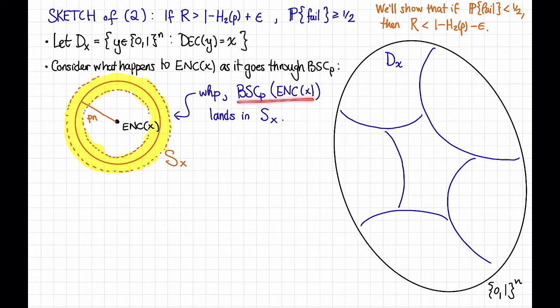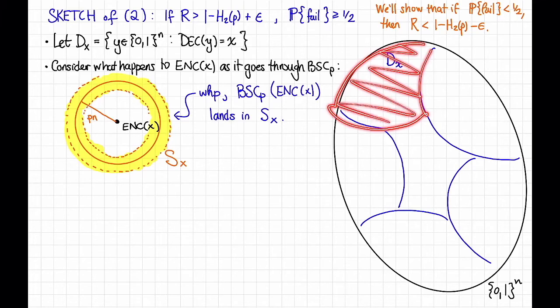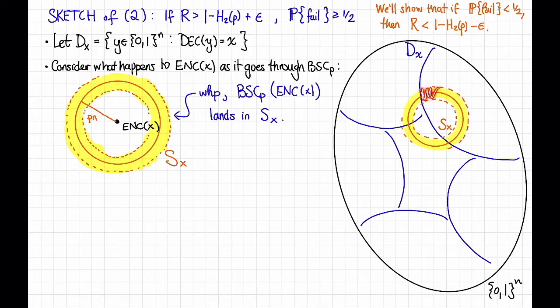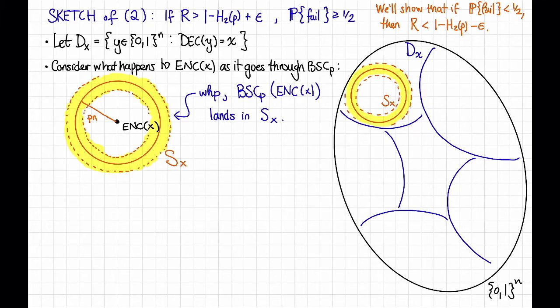So we have that with high probability, the binary symmetric channel acting on the encoding of x lands in S_x. Therefore, since the failure probability is meant to be small, smaller than a half, a lot of the mass of S_x here has to be contained in D_x. That is, the picture should look something like this. And that's because if this annulus were to lie somewhere else, not mostly contained within D_x, let's say it looks something like that, then with really high probability, the encoding of x would end up out here somewhere and not in D_x, and then we'd get a failure. So instead we have to have S_x living mostly within D_x.